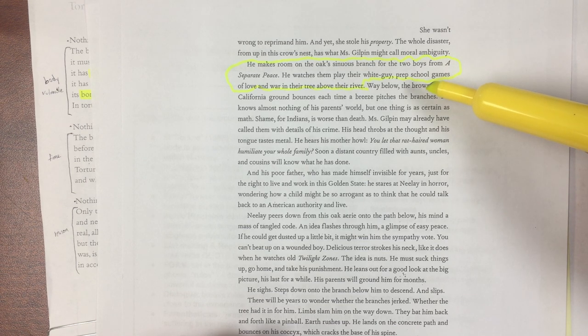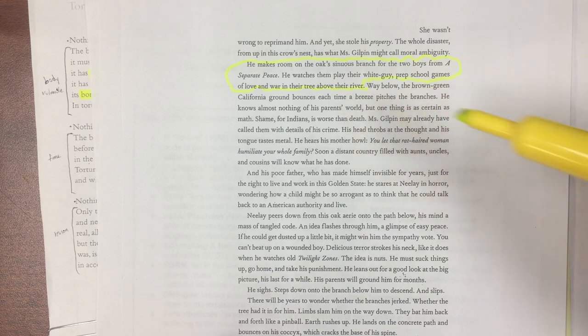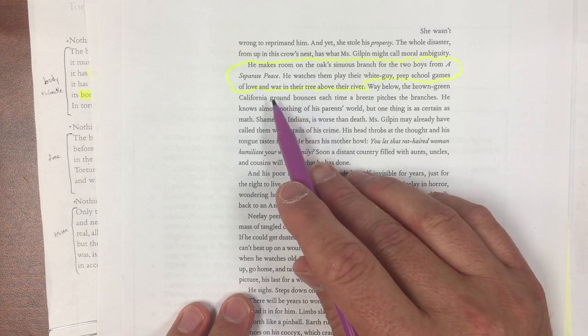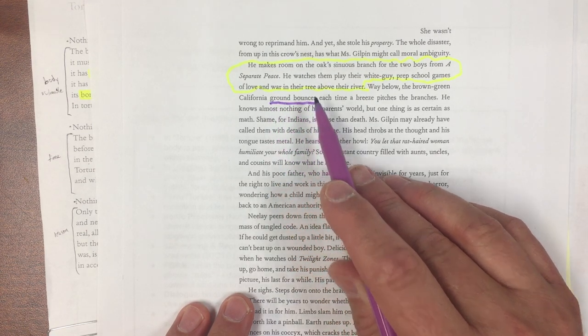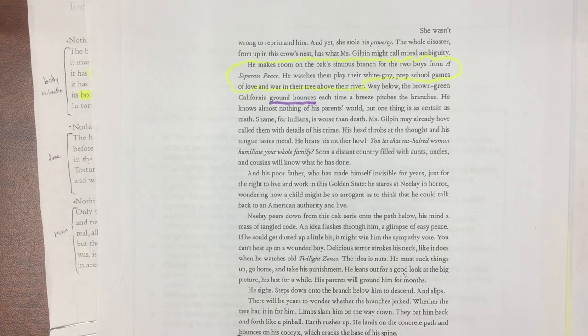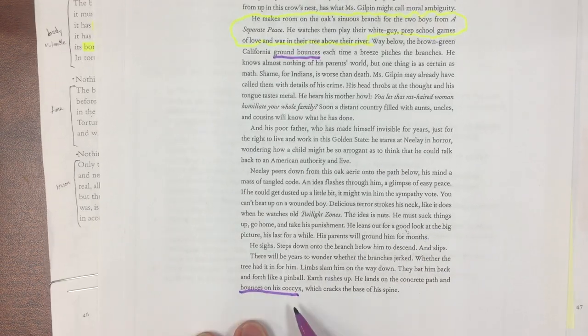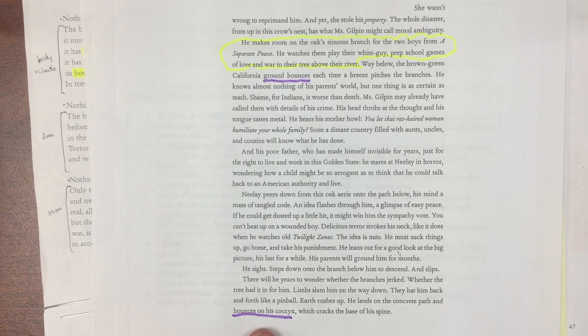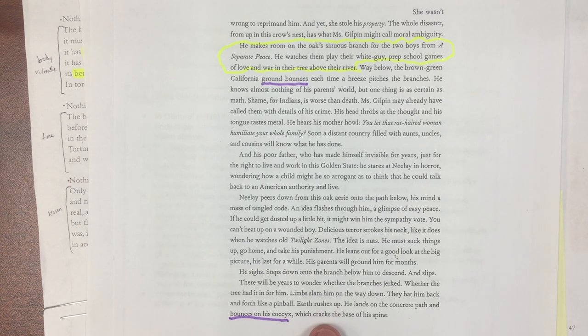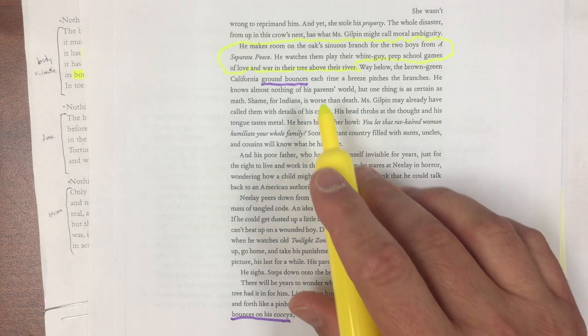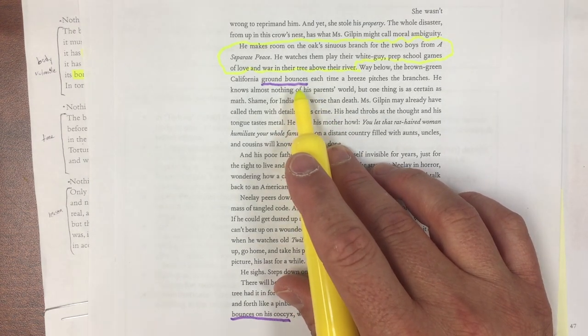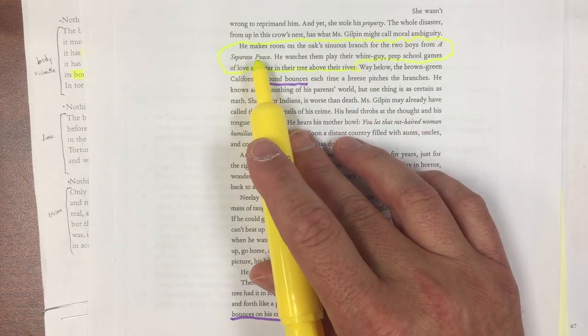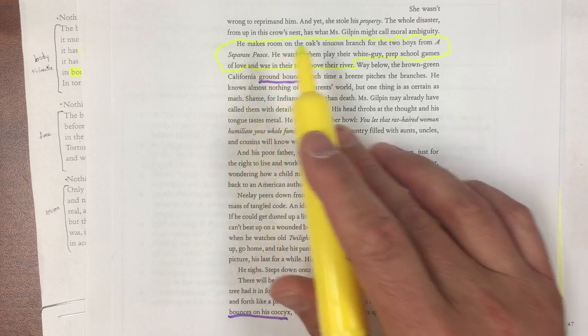Way below the brown-green California ground bounces each time. Now, he's about to fall out of a tree. And so a bonus point would be if you recognize this bounces, the ground bounces. Later in the extract, he's going to fall out of the tree bounce on his coccyx, which is his bottom. But he cracks the base of his spine, becomes paralyzed. This is a really important moment in this novel. So you might say that foreshadowing, but that would be like a bonus. That would be like, because that one's not as obvious. It's obvious if there's an italicized name of another work in a work that what is happening is an allusion. Allusion.